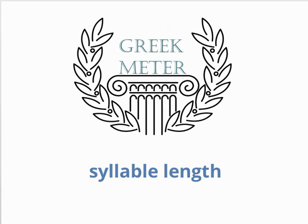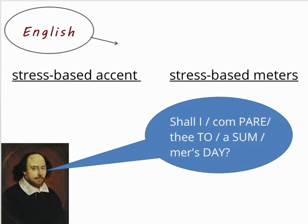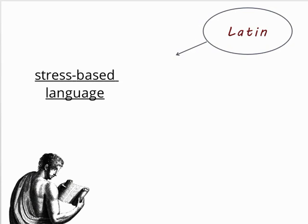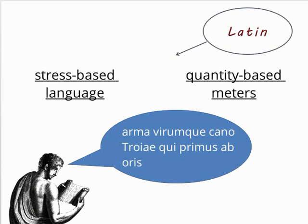Thus, Latin adopted poetic meters suited to a different language and plugged their own words into it. English, a language with a stress-based accent, has stress-based meters, like iambic pentameter. Latin, also a stress-based language, has quantity-based meters. These meters had their own natural accents, which sometimes conflicted with the natural stress-based accents of the words — something the poets had to keep in mind when writing.